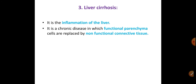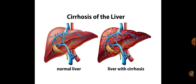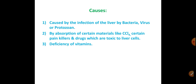The third disorder is liver cirrhosis — it is the inflammation of the liver, meaning swelling of the liver. It is a chronic disease in which functional parenchyma cells — the liver tissues — are converted into non-functional connective tissue. In a normal liver, the parenchyma cells are active, but in cirrhosis they become inactive connective tissue. You can see in the diagram the difference between a normal liver and a liver with cirrhosis.